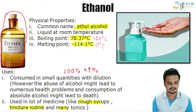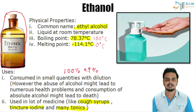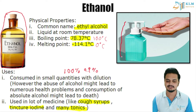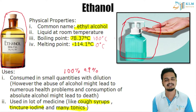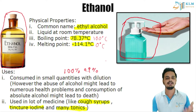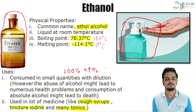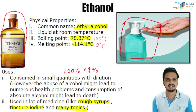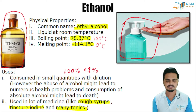Ethanol is also used in medicines such as cough syrups, tincture of iodine, and many tonics. A recent use not in NCERT textbooks is hand sanitizer — it is mainly ethanol. The hand sanitizer you use is ethyl alcohol, but it is denatured so you cannot drink it. Methanol is more harmful than ethanol, and even small amounts of methanol can lead to death.